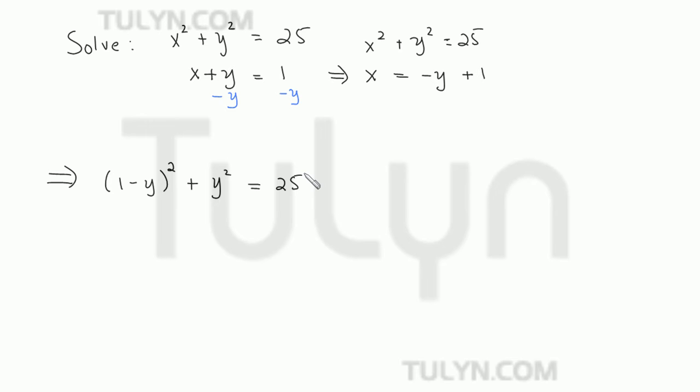And so now this is the new equation and we have to solve for y. So the first thing we do is we FOIL out 1 minus y squared. So what do we end up getting? We get 1 squared, which is just 1 minus y minus y plus y squared. So this is y squared minus 2y plus 1, and we're placing it into the equation plus y squared is equal to 25.